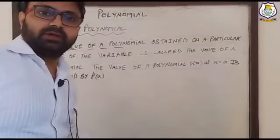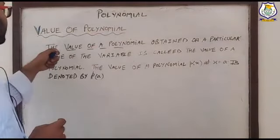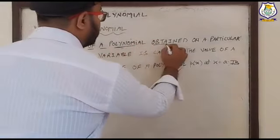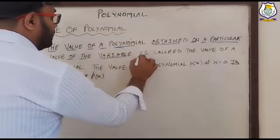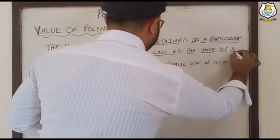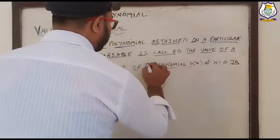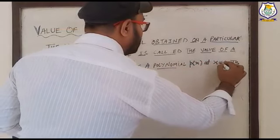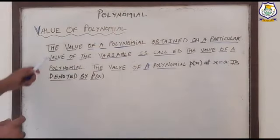My name is Pramir Singh Parihal, your math teacher. In polynomials, we have a new topic: value of a polynomial. The value of a polynomial obtained at a particular value of the variable is called the value of the polynomial. The value of polynomial p(x) at x equal to a is denoted by p(a).